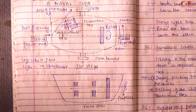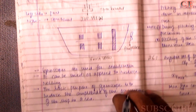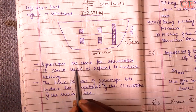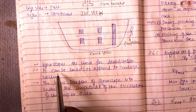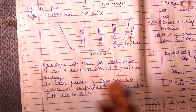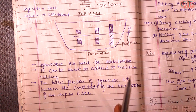As we studied gyroscopic effect and couple in the context of airplanes in a previous video — to understand what happens to the nose and tail — similar analysis applies to naval ships. Gyroscopes are used for stabilization of ships. They can be applied to reduce rolling, not allowing the ship to roll, and they also reduce the amplitude of oscillation, thereby reducing pitching of the ship.